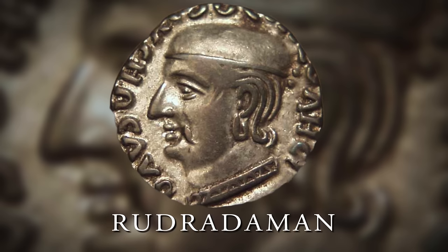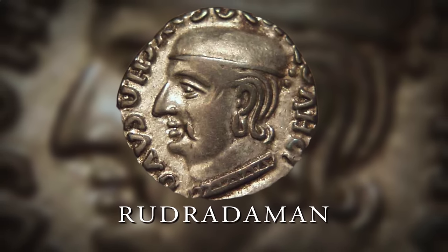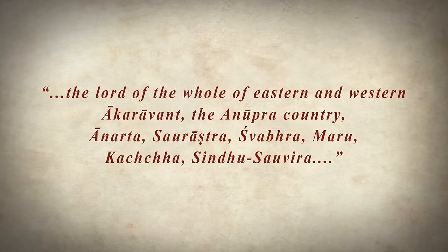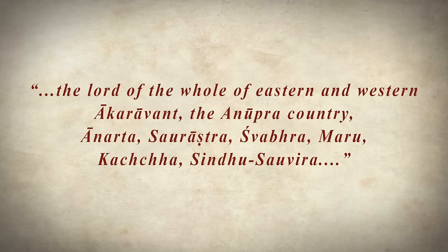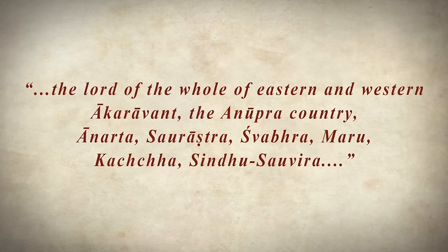Despite the decline of Barkarikon, the lower Indus valley remained strategically important, particularly for powers based in Gujarat. The famous Western Kshatrap ruler Rudradaman, in his Junagad inscription, states that he was lord of the whole of eastern and western Akravand, the Anupra country, Anarth, Saurashtra, Swabhra, Maru, Kacch, Sindhu-Savir, and more. Based on this inscription, we can clearly confirm that the region of Sindhu-Savir was modern Sindh, and that the Western Kshatraps had control over this region around mid-2nd century AD.